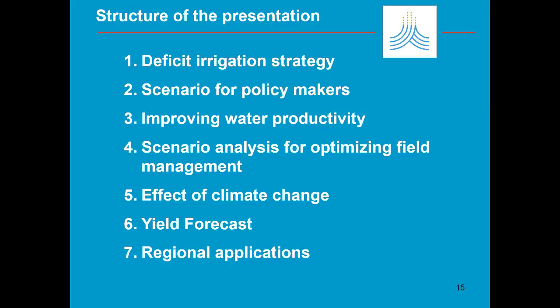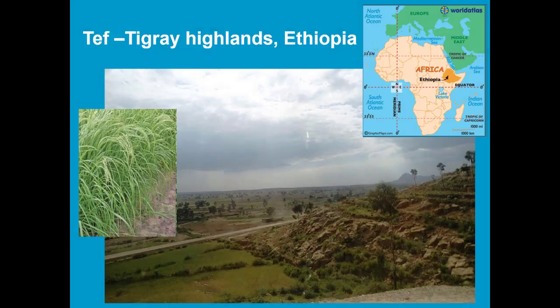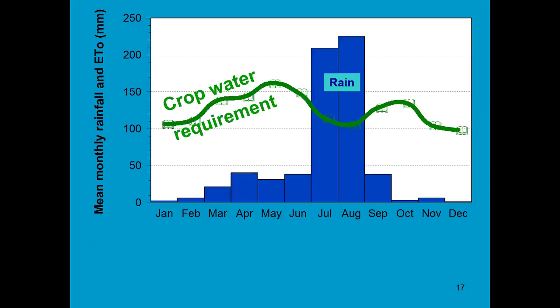In this part of the training module I will show an example with which the water productivity is improved. Tef is grown in Ethiopia. The example is worked out for the Tigray Highlands in the northern part of Ethiopia. Throughout the year rainfall is low.